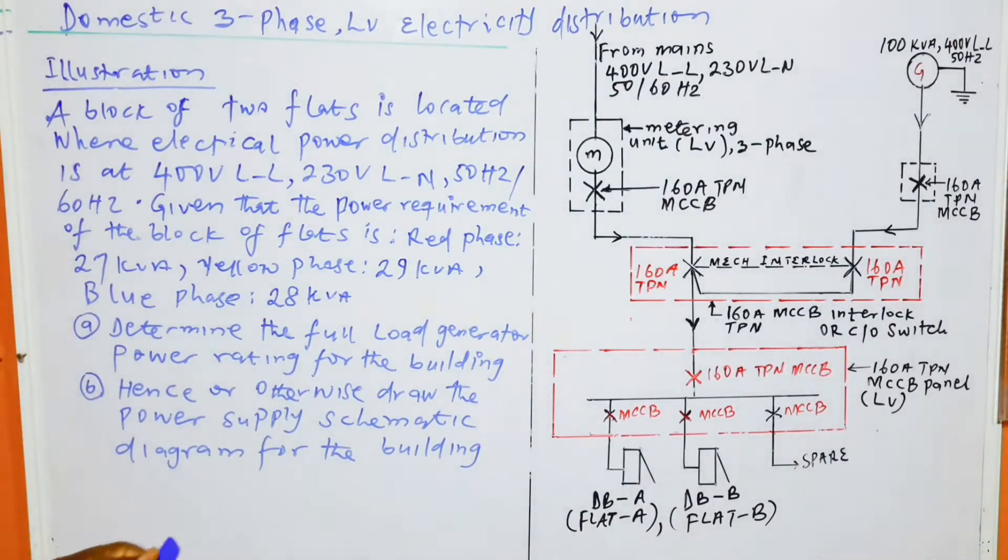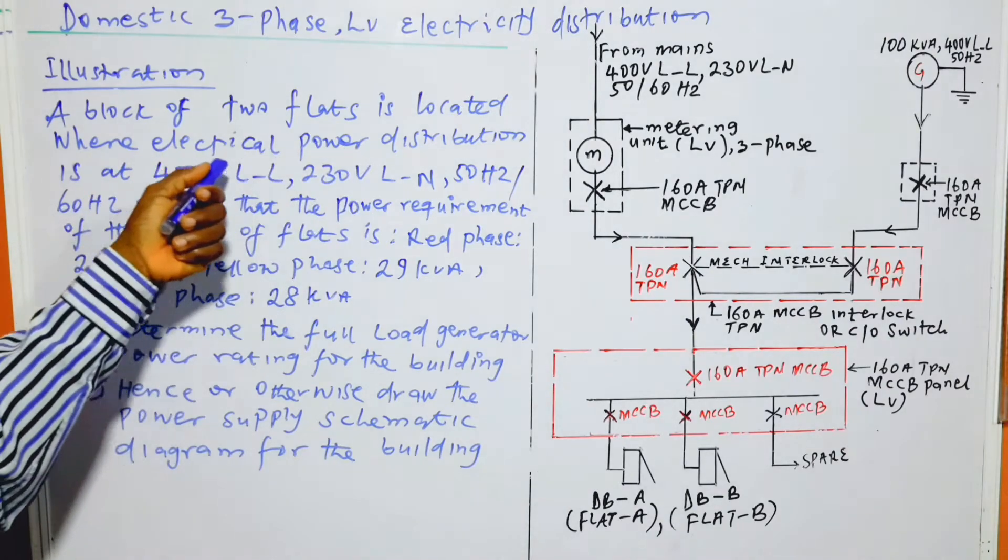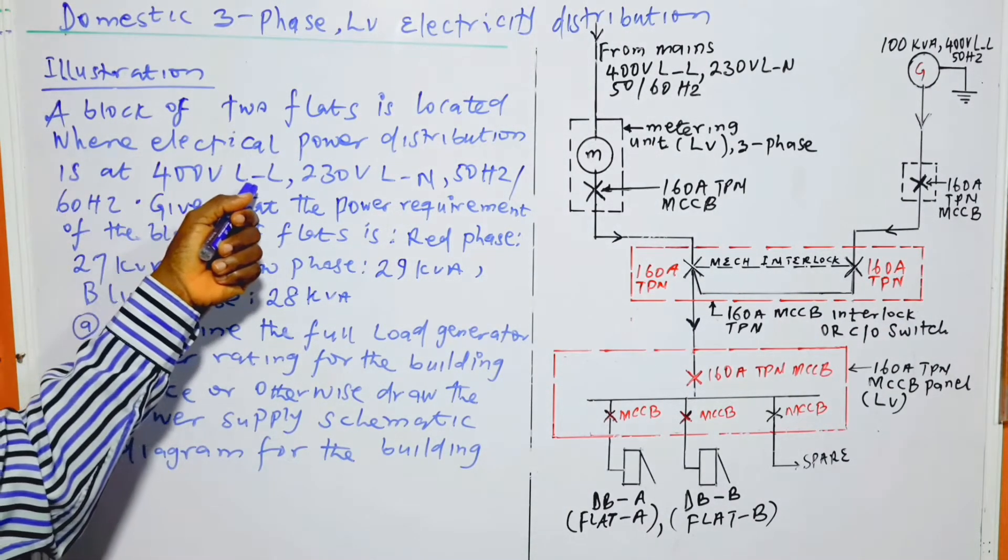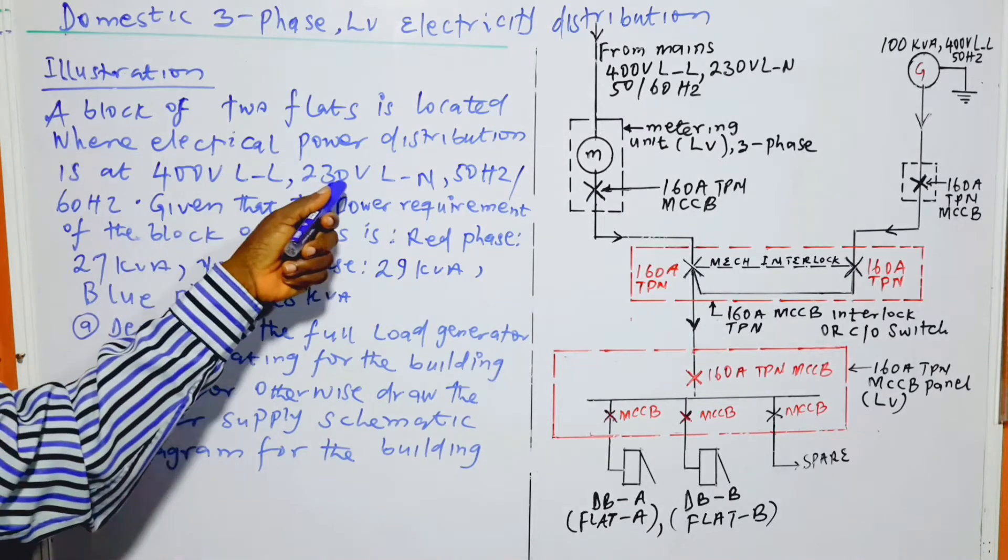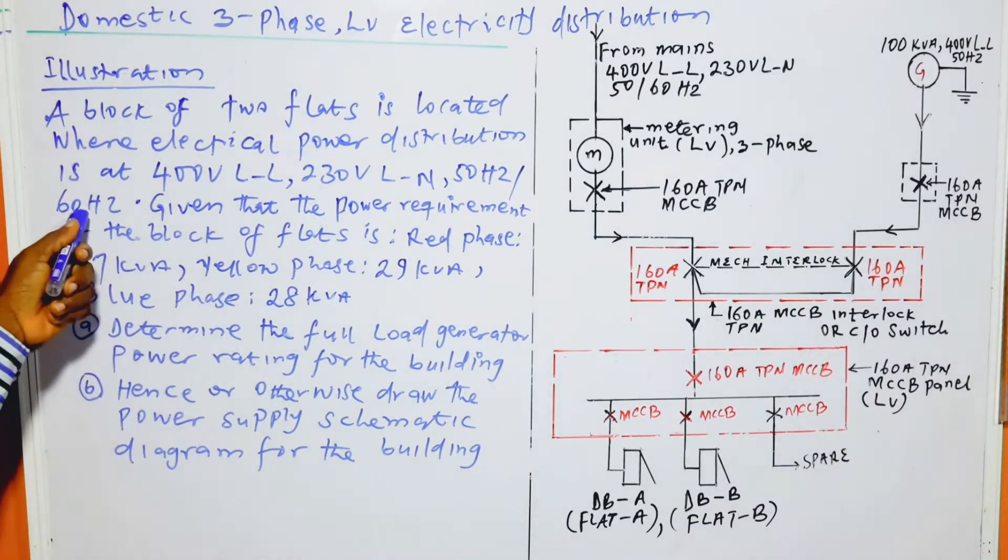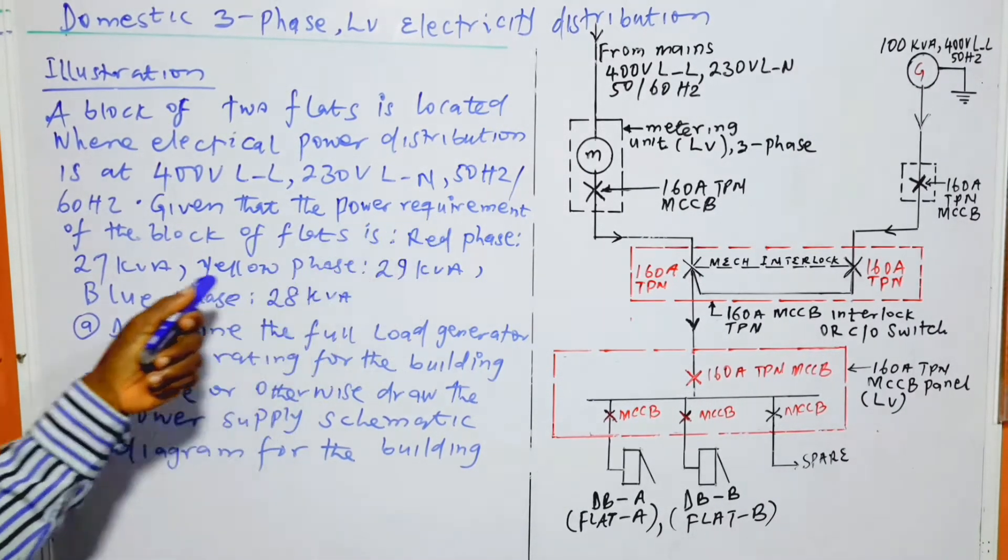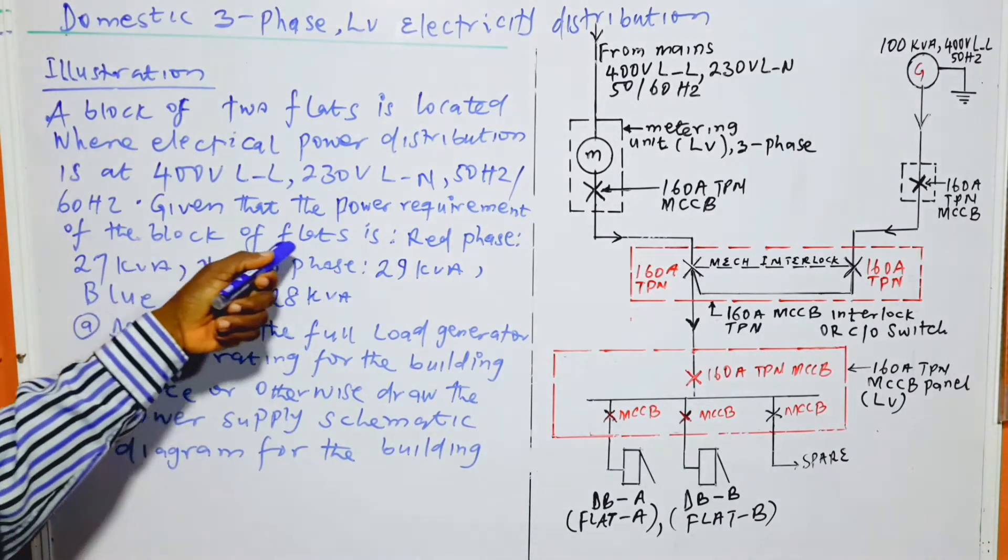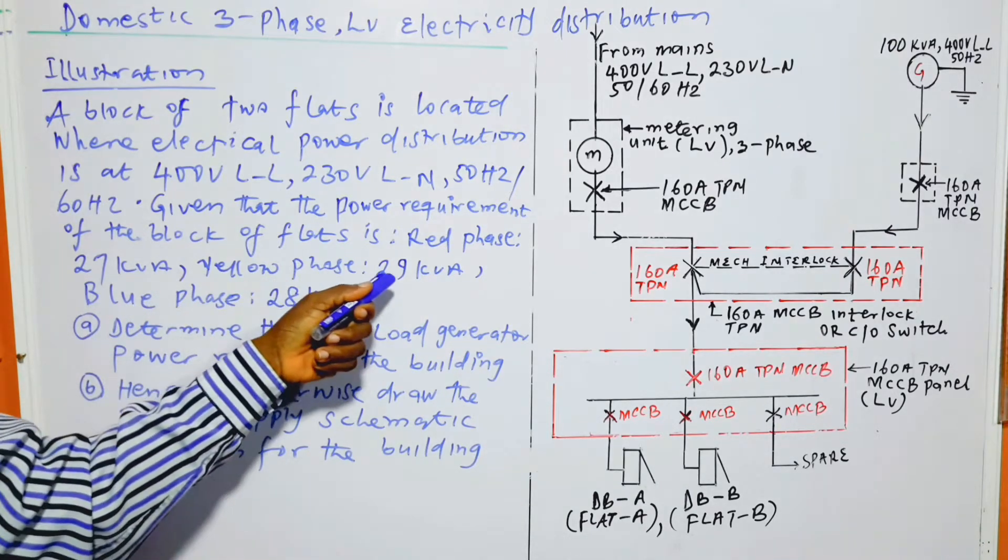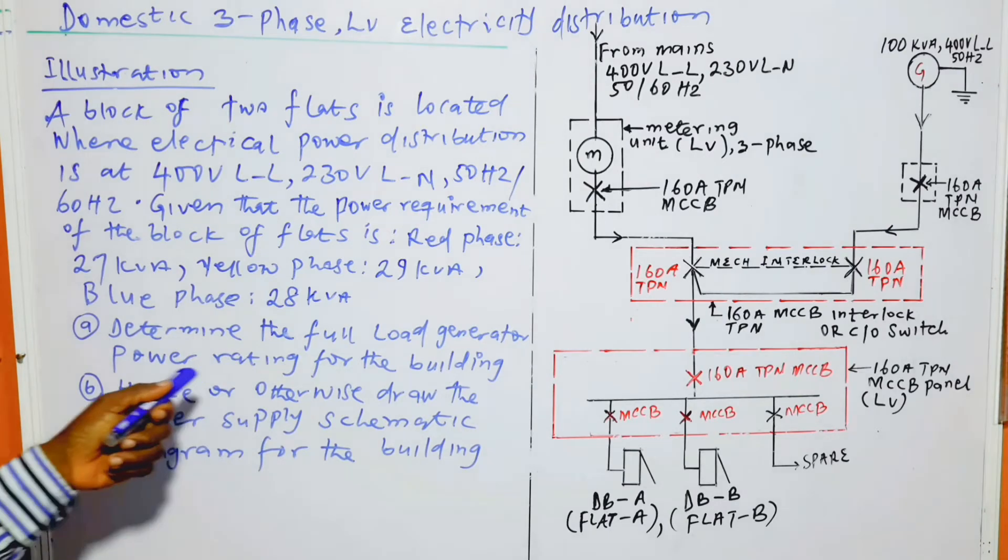Now the illustration. A block of two flats is located where electrical power distribution is at 400 volts line to line, 230 volts line to neutral, 50Hz or 60Hz frequency, given that the power requirement of the block of flats is red phase 27 kVA, yellow phase 29 kVA, and blue phase 28 kVA.